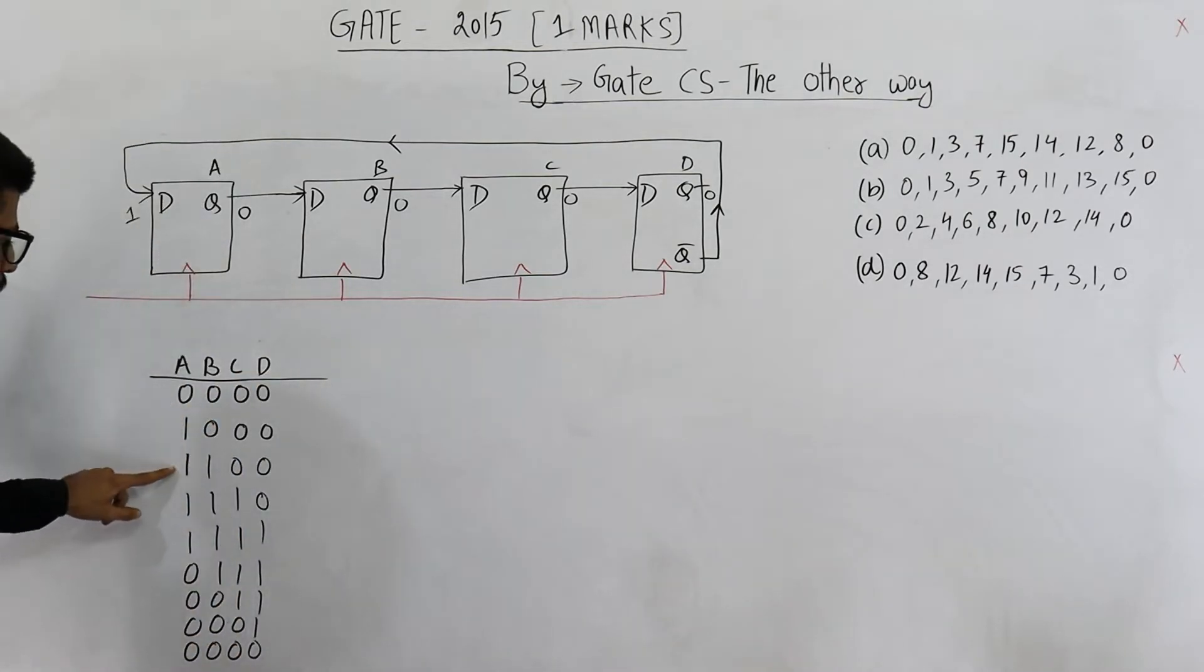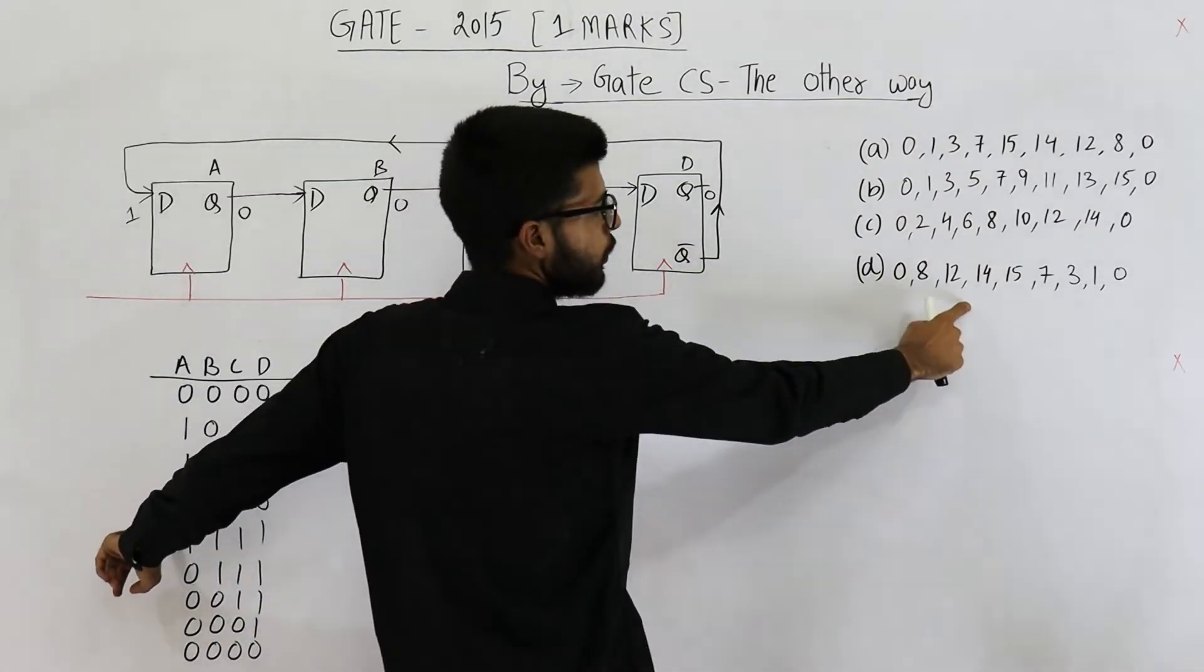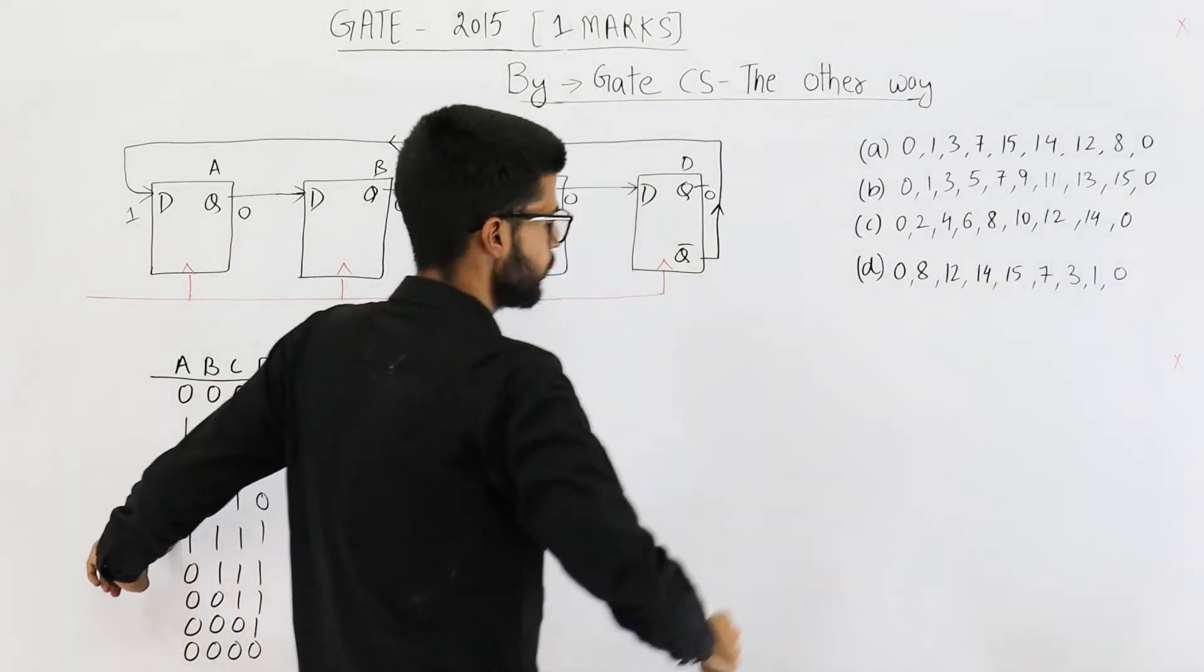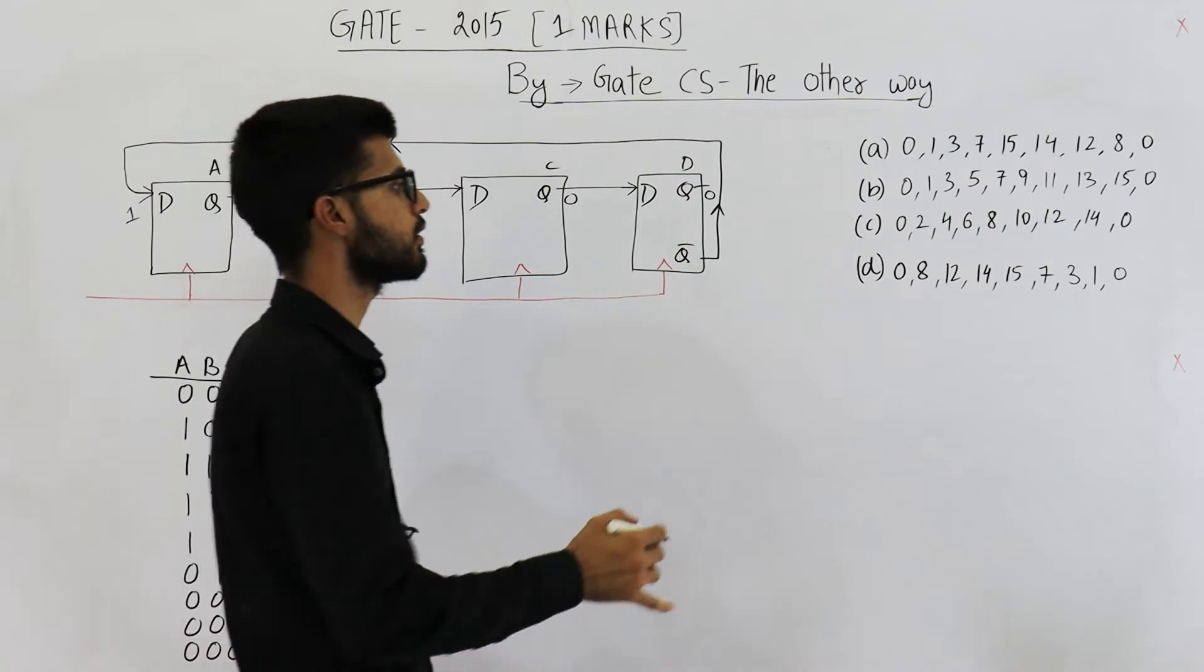0, 8, 12, 14, 15. 0, 8, 12, 14, 15, 7, 3, 1, 0. 7, 3, 1, 0. Yeah. So answer is option D.